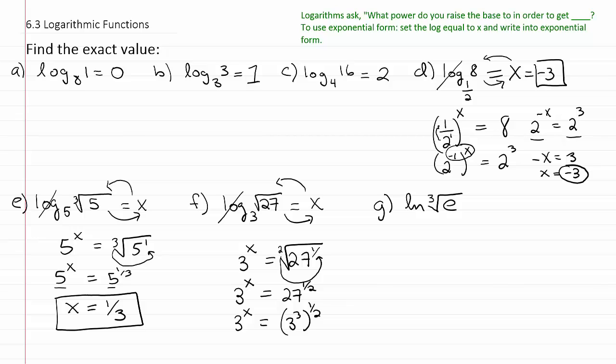And then from there, of course, it's 3 to the x power is equal to, if we multiply these two, we end up with 3 halves. So 3 to the 3 halves power. And then finally, because the bases are the same, we can drop the base and we can just say that x must therefore be equal to 3 halves.